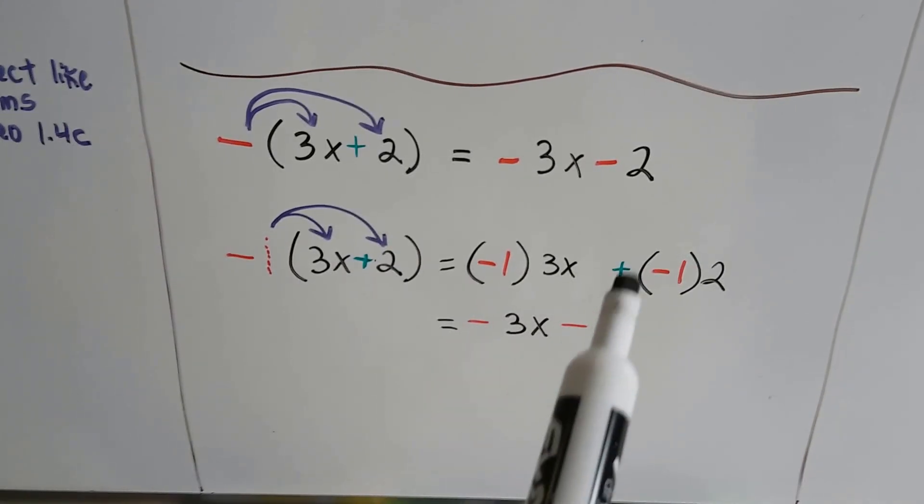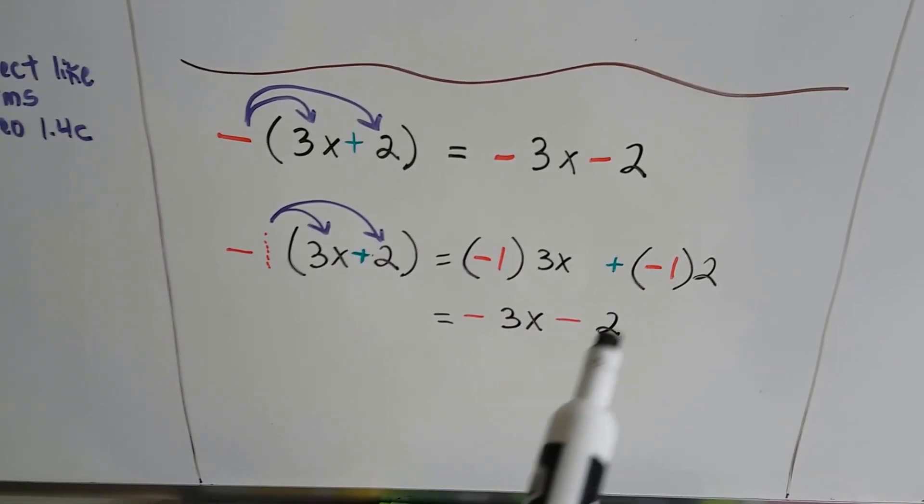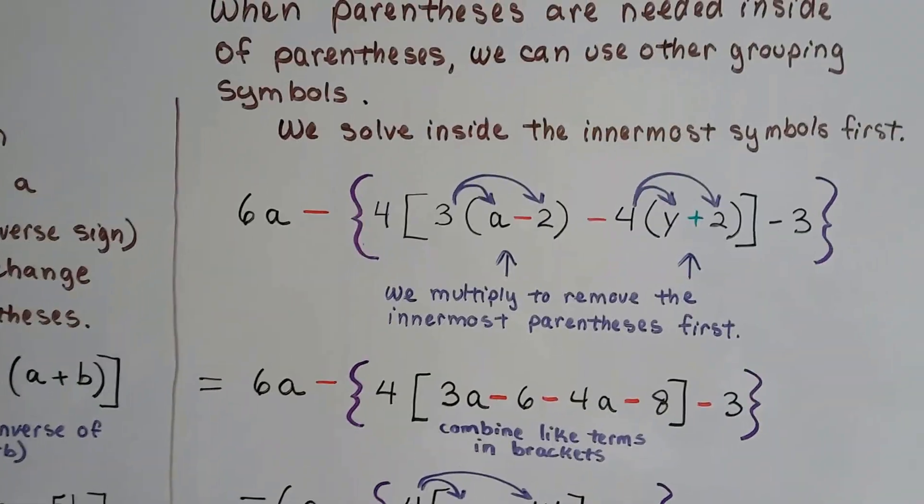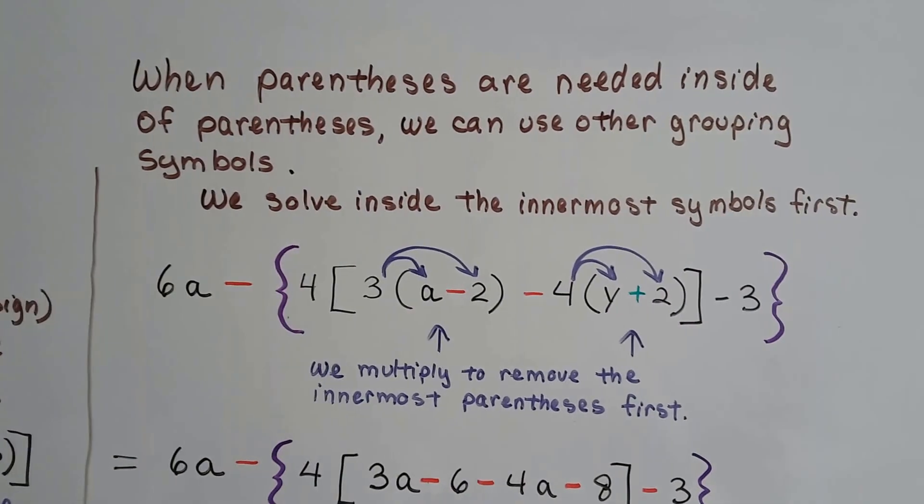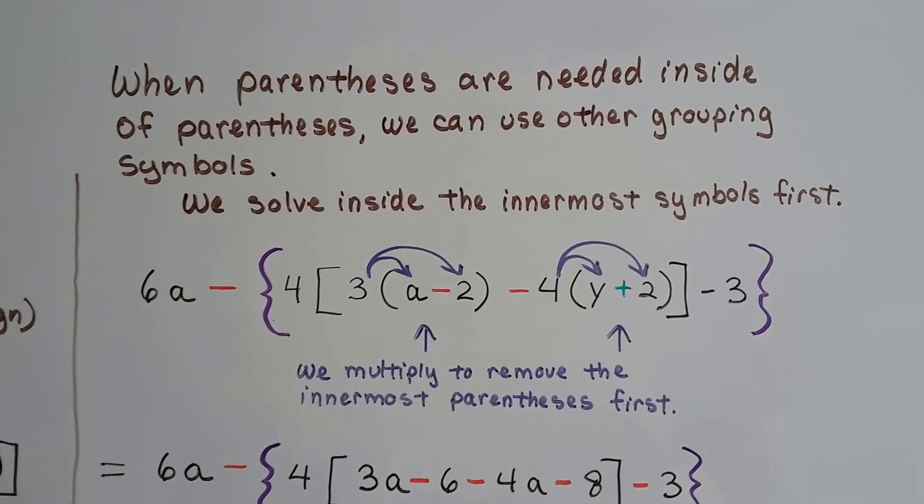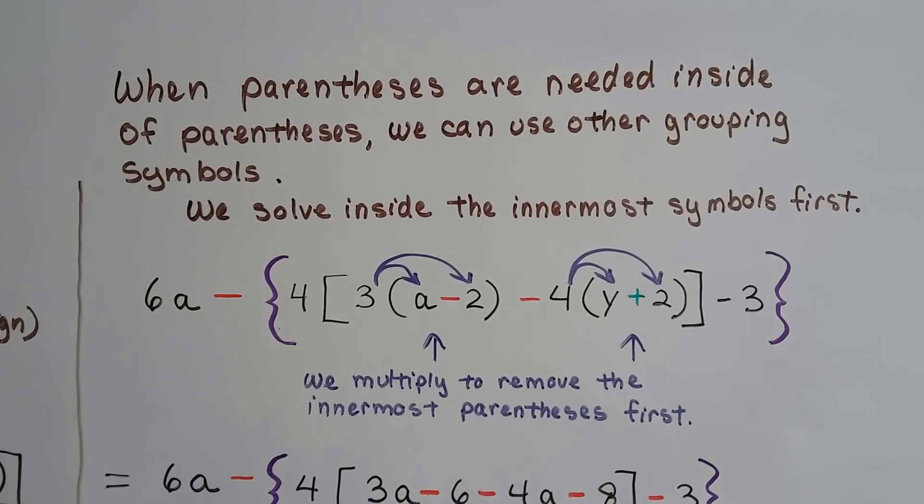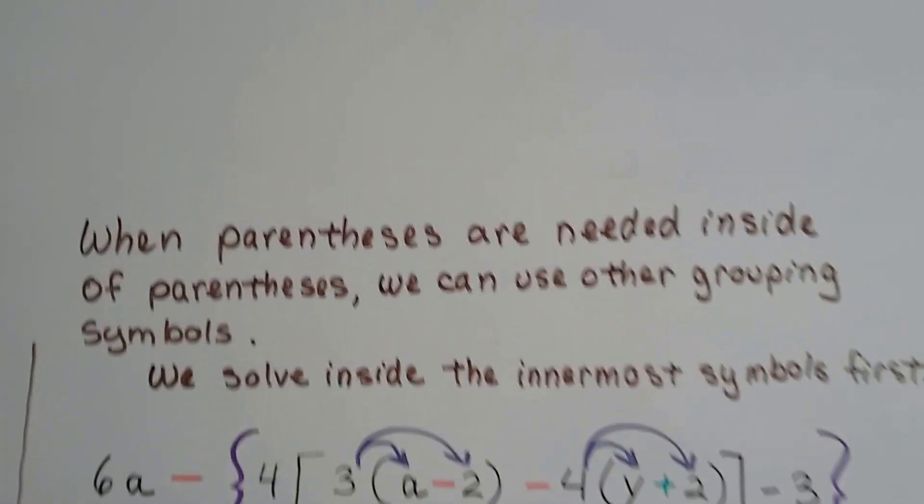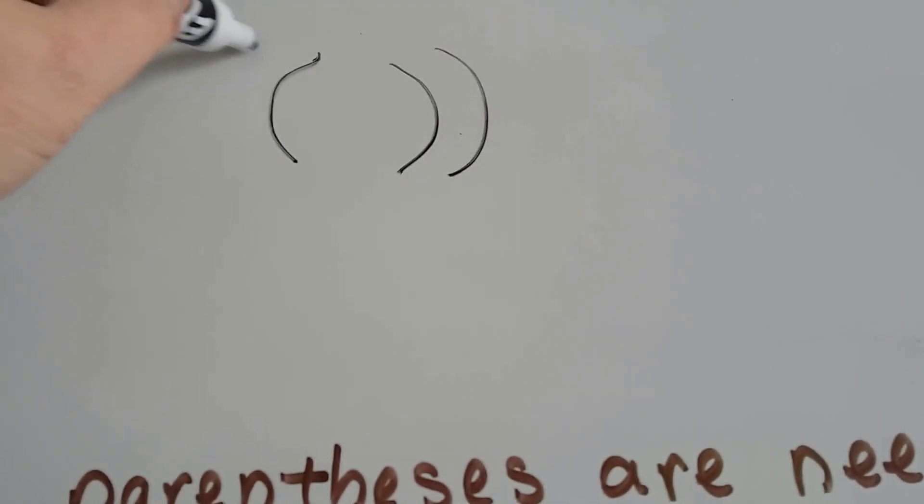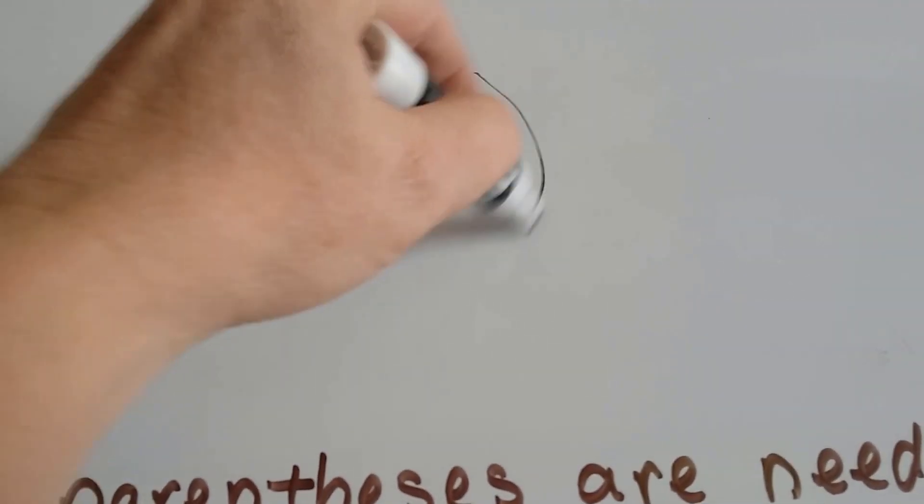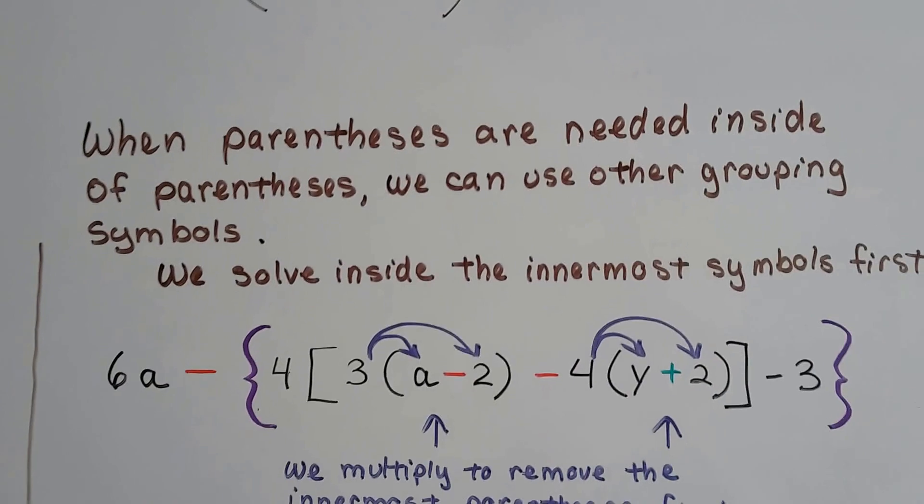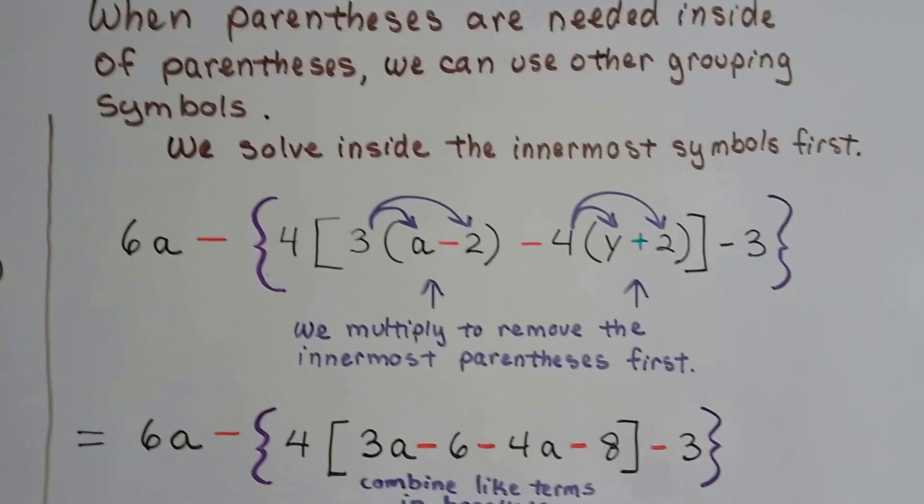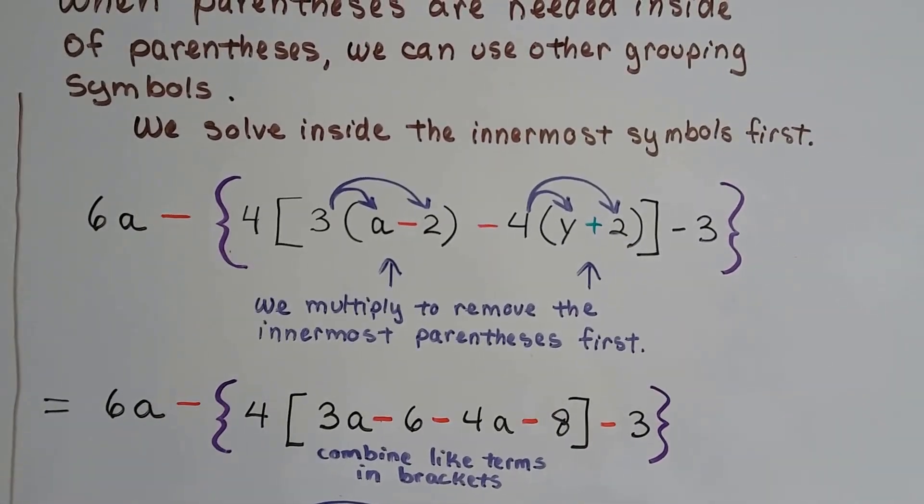And it gives us the negative 3x minus 2, because a positive and negative makes a negative. And when parentheses are needed inside of parentheses, we can use other grouping symbols. There's other grouping symbols that we can use, and it'll make it a lot easier on our eyes. Now you could use all parentheses, and you could just have parentheses, inside parentheses, inside parentheses. You can do that. But it's a lot easier to use different grouping symbols. We solve inside the innermost symbols first.